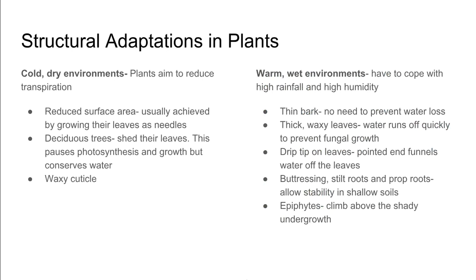Structural adaptations in plants depend on the environment in which they live. In cold, dry environments, plants aim to reduce water loss by transpiration. They may have reduced surface area, usually achieved by growing their leaves as needles. They may be deciduous trees that shed their leaves, which pauses photosynthesis and growth but conserves water within the plant. Or they may have waxy cuticles.